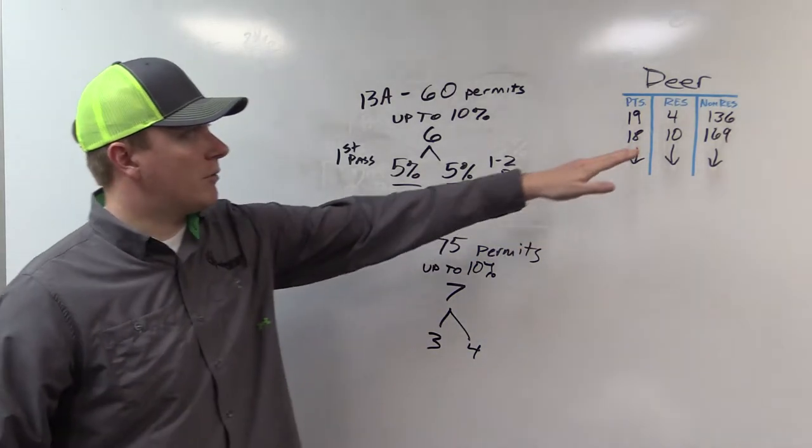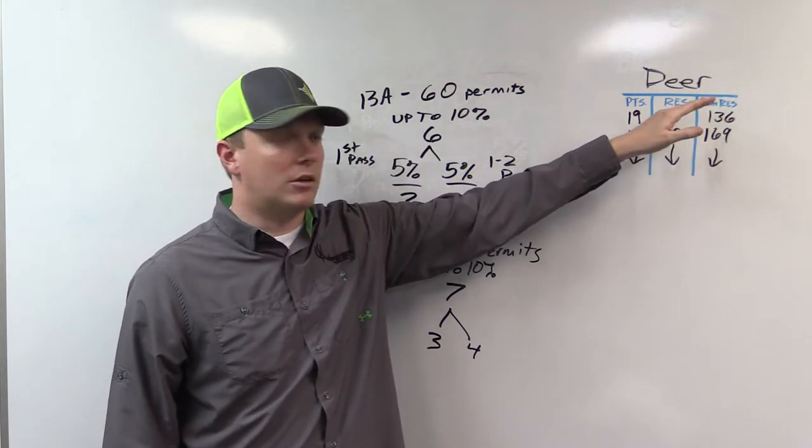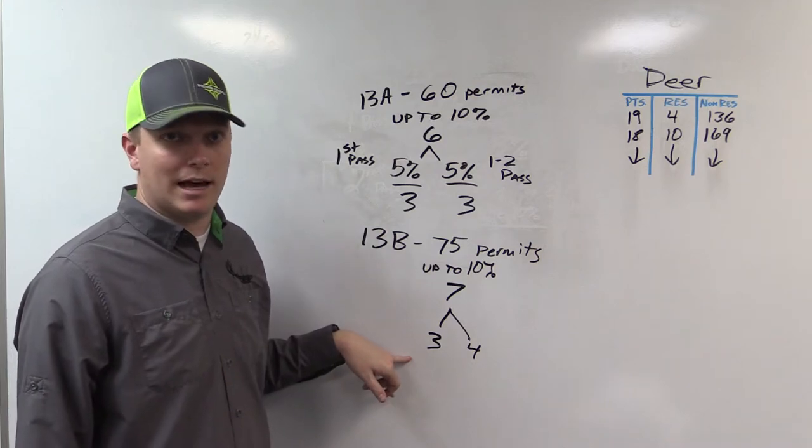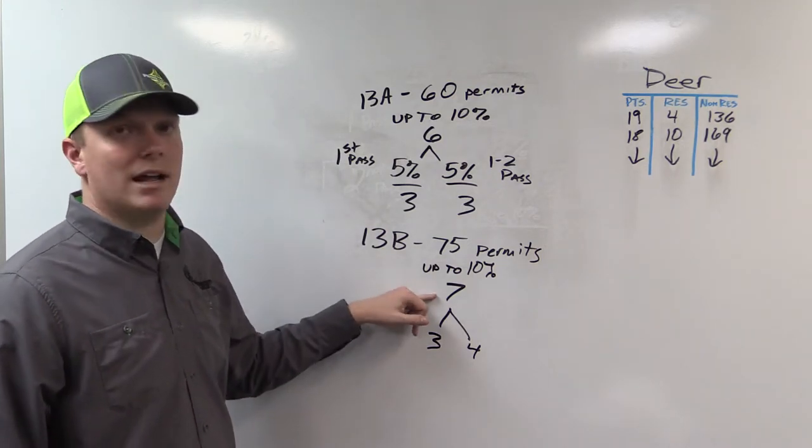Okay, so if you're one of these 136 people with 19 points, going into the bonus pass, the first pass, you have a chance at 3 permits. That is it. You used to have a chance at 7. Now you have a chance at up to 3.